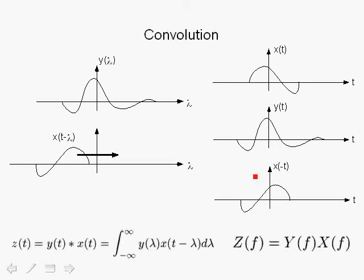Plotting y(lambda) and x(t − lambda) as functions of lambda, at t equals zero we get x(−lambda). For various values of t, we move the function around in time as a time offset. So z(t) is obtained by fixing t, computing x(t − lambda), multiplying by y(lambda), and integrating over lambda, with t ranging from minus infinity to infinity, giving us a function of time — this is the definition of convolution.